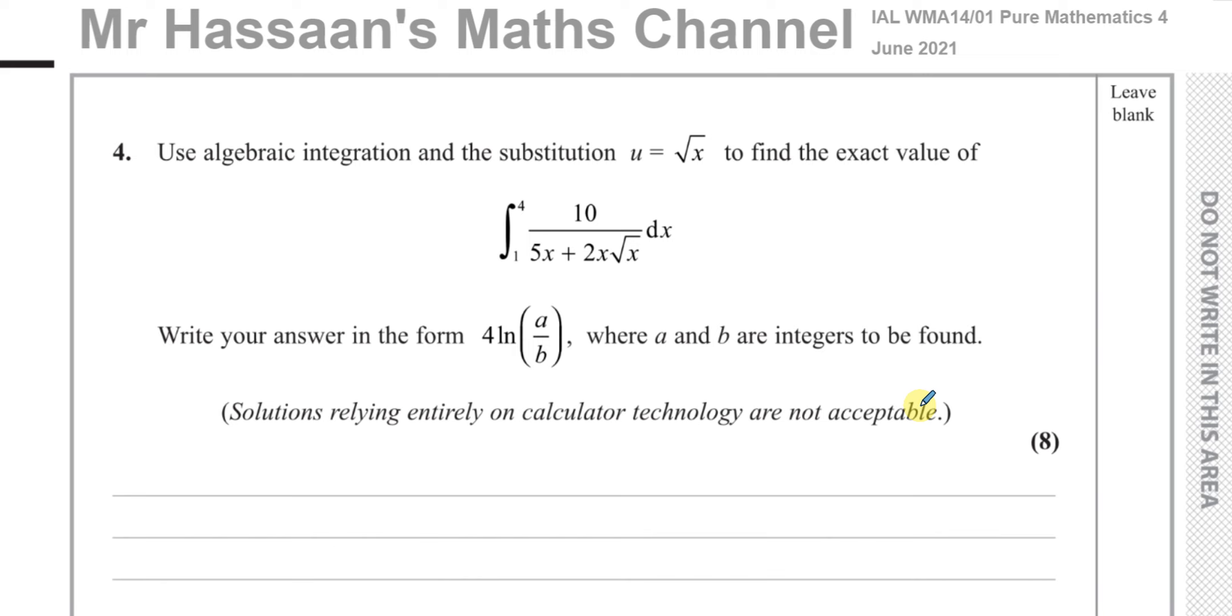This question here is about integration by substitution. It tells us to use algebraic integration and the substitution u equals the square root of x to find the exact value of the integral between the limits of 1 and 4 of 10 over 5x plus 2x times root x with respect to x. Write your answer in the form 4 ln a over b where a and b are integers to be found. There's 8 marks to this question.